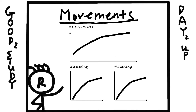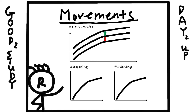Now let's talk about potential movements that can happen to a yield curve. If the yield curve shifts up or down parallelly, we call it parallel shifts. It happens when all interest rates on the yield curve increase or decrease by the same amount. This doesn't happen often.